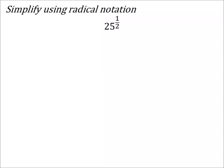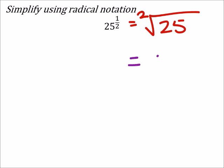Simplify using radical notation. So this one is going to be the square root of 25. If you want to put that 2 there, you can, because formally they don't really want to see that there, which means on the homework they probably won't. But really the answer to this is just 5, because it's the principal square root of 25.